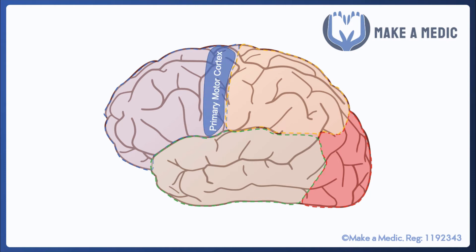First and foremost, the primary motor cortex is the part of the brain which is responsible for initiating any of our voluntary motor commands, and this is located at the posterior aspect of the frontal lobe. On the other side of the central sulcus we've got the primary somatosensory cortex, which is located in the parietal lobe — this is responsible for processing various forms of sensory information.